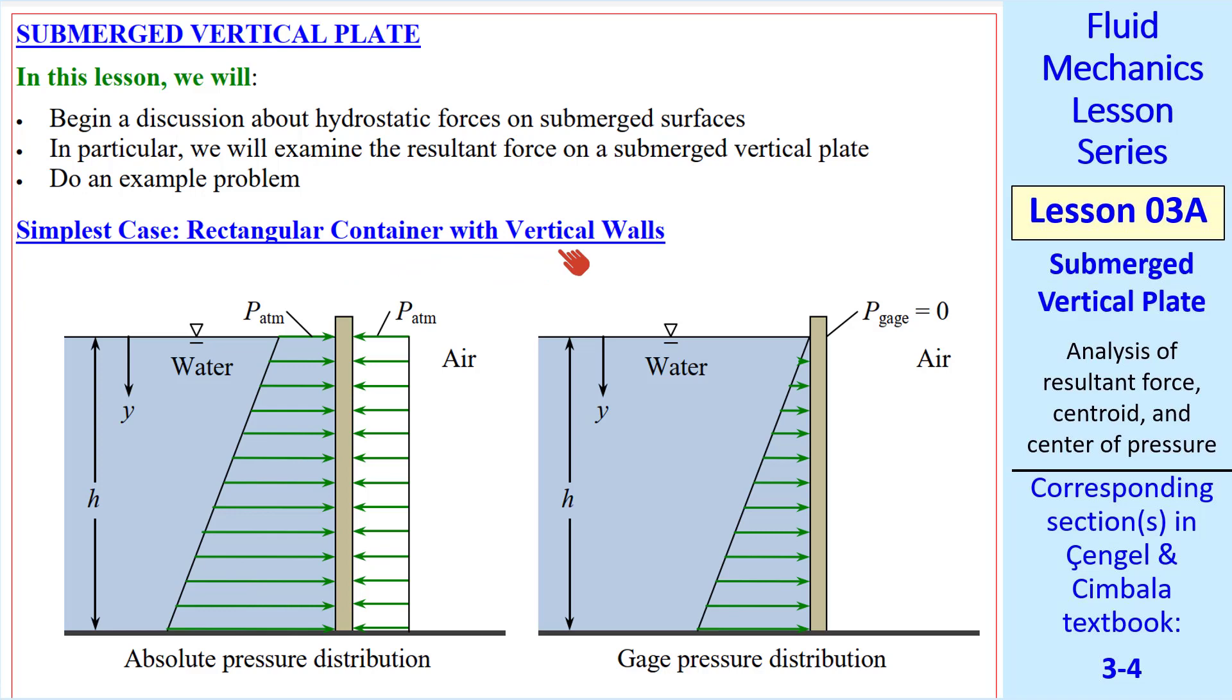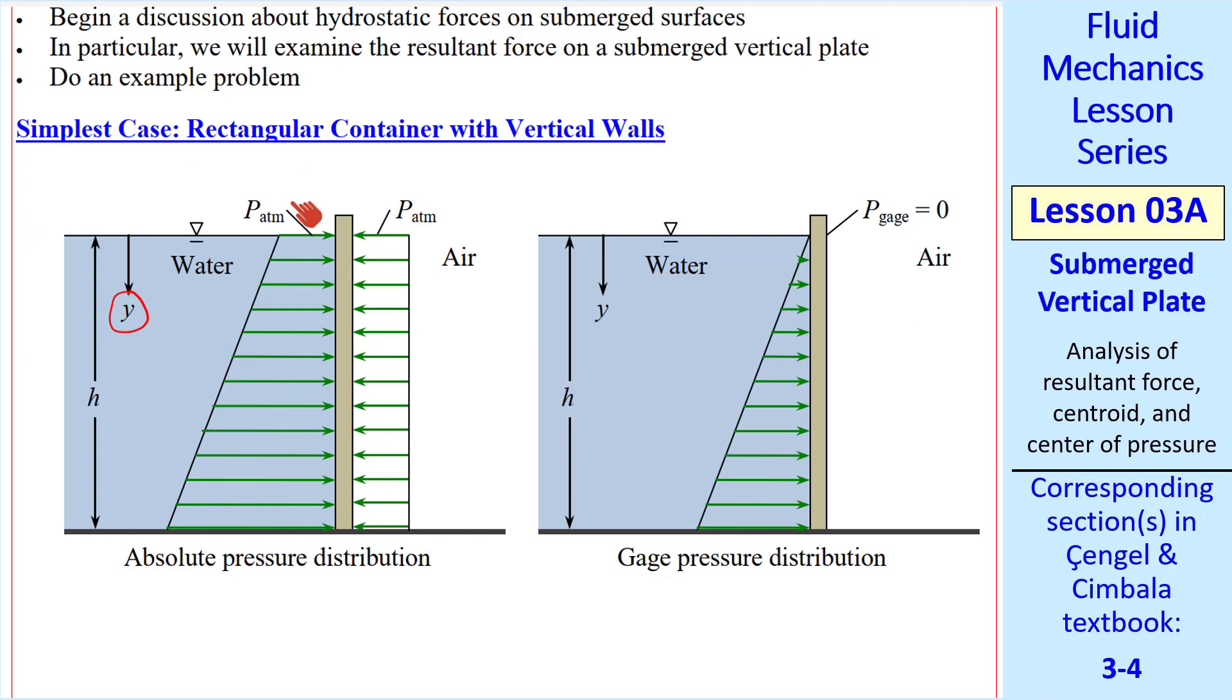Consider some rectangular container with vertical walls, perhaps the wall of a swimming pool. The container is filled up with water. Note the different notation here. In these problems, Y is down from the surface, parallel to the plate in question. Since our plate is vertical here, Y is straight down. Later, we'll look at inclined plates and Y will be parallel to the plate.